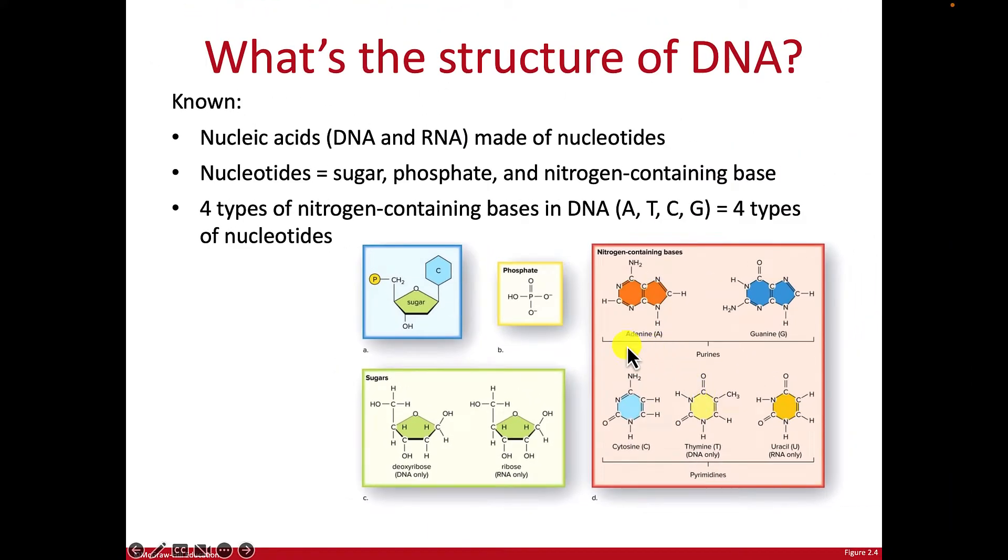The bases that you have in DNA are adenine, that's the A, guanine which is the G, cytosine is the C, and thymine is the T. This other base, uracil, is in RNA only, and we will talk about that in gene expression.